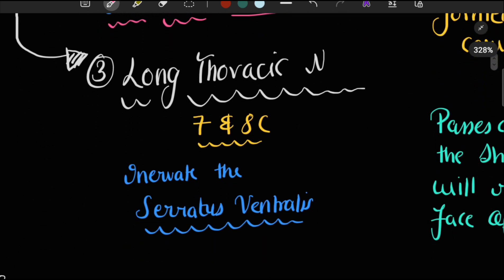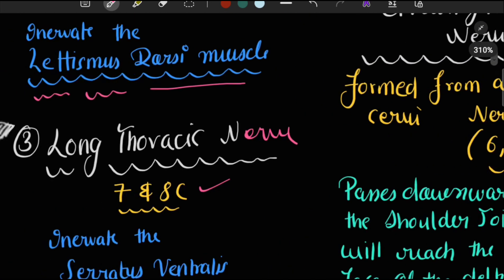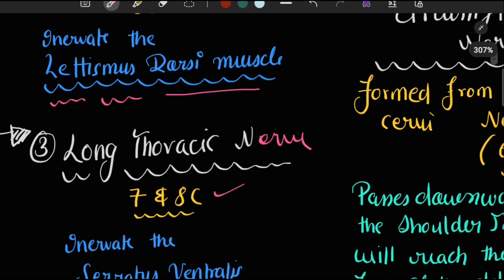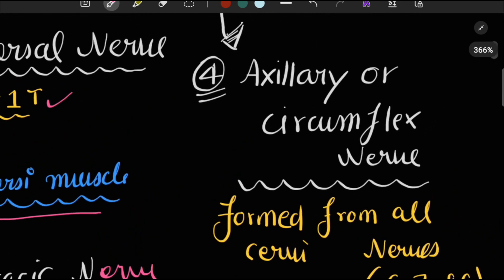The third branch is the long thoracic nerve, formed by the seventh and eighth cervical spinal nerves. It supplies the serratus ventralis muscle.